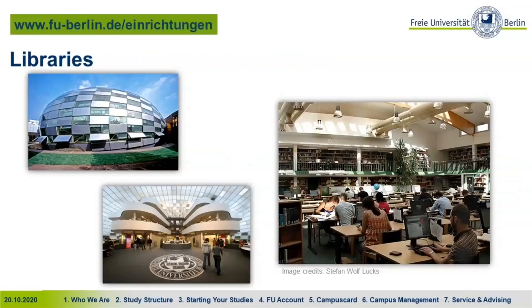At the university we do not have just one library but many. There is one university library with literature on every subject, and then there are different libraries for different subject areas. The Philologische Bibliothek — the library for programs dealing with languages and literature — is quite renowned because it was designed by Norman Foster and looks like a brain from the outside and inside.